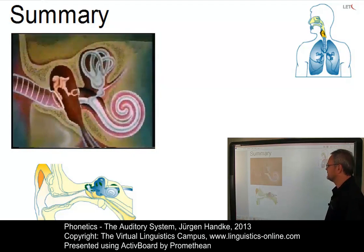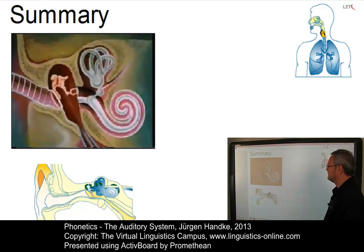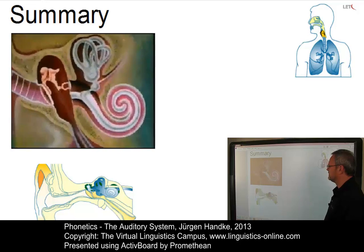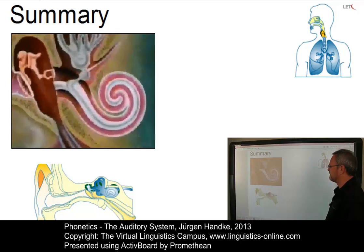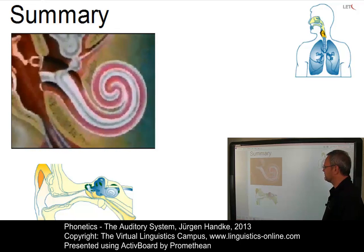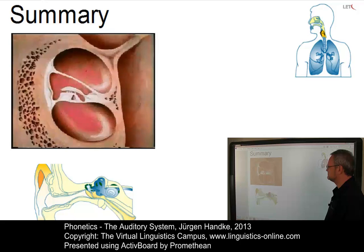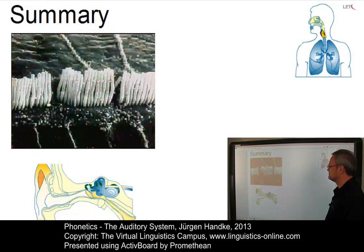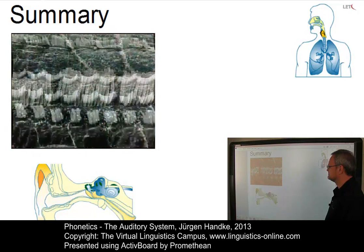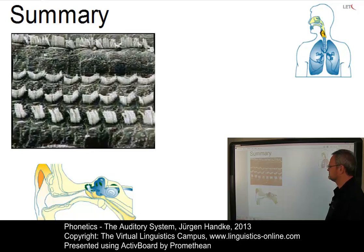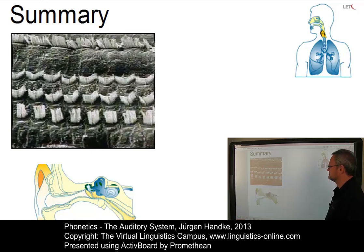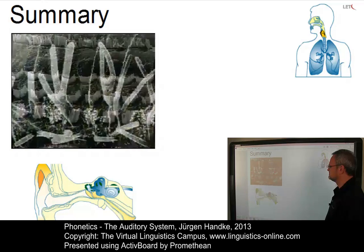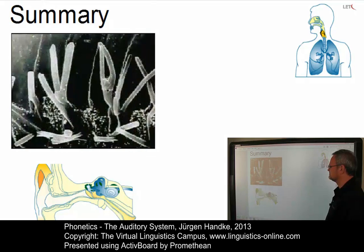When sound travels through the ear canal, it causes the eardrum to vibrate. These vibrations are transmitted through the middle ear by three small bones, the so-called ossicles, to the cochlea, the main organ of the inner ear. When the cochlea is set in motion by an incoming sound, tiny hair cells convert the mechanical movements into neural activity.